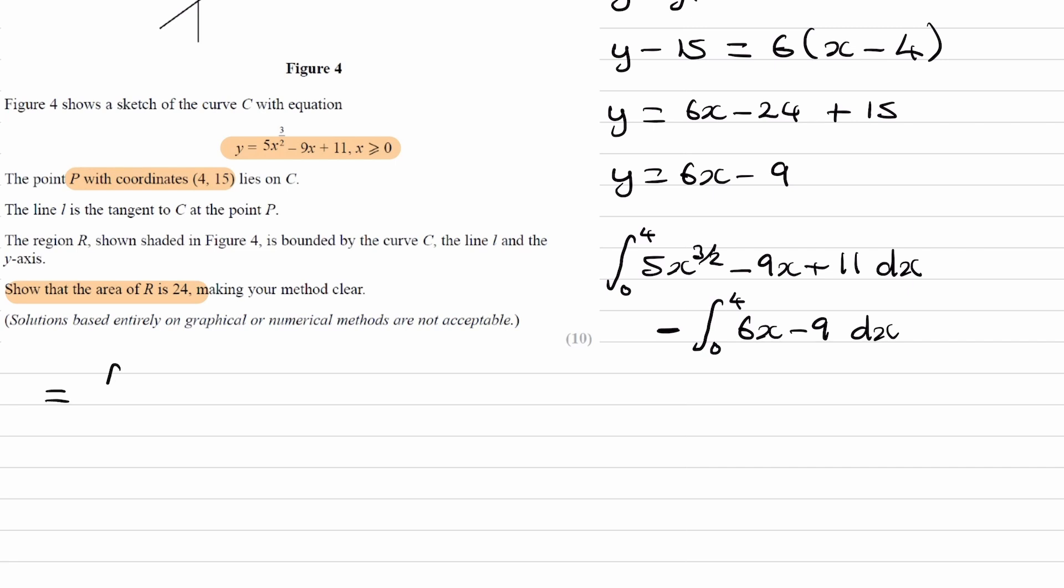So this is the same as the integral from 0 to 4 of 5x to the power of 3 over 2 minus 9x plus 11 minus 6x minus 9. I'll put them in brackets just so it's easy to see we have our curve here, our line there.